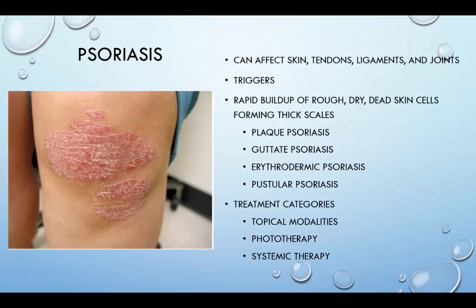Psoriasis is a chronic, distressing skin disorder that can affect skin, tendons, ligaments, and even joints. Factors that may trigger psoriasis include a systemic infection such as strep throat, an immune system response to disease, injury to the skin, certain medications, alcohol, and environmental factors such as overexposure to the sun, or prolonged contact with chemicals such as disinfectants or paint thinners. Topical therapies are effective for mild to moderate cases, while phototherapy and systemic medications are more appropriate for more severe cases.